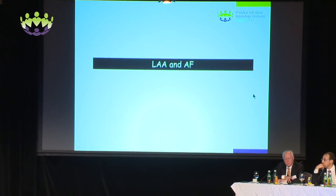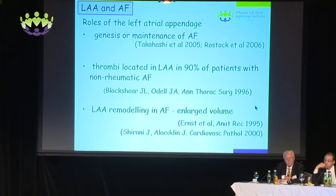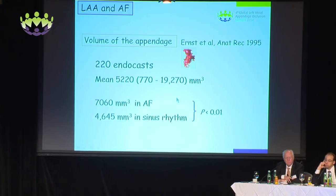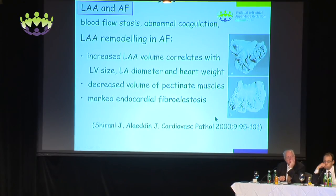The relationship of the left appendage and atrial fibrillation: there have been several studies reporting this. Thrombi are located in the left appendage in about 90% of patients with non-rheumatic atrial fibrillation. Anatomic studies showed left atrial appendage remodeling in atrial fibrillation, giving enlarged volumes. Ernst's study showed a distinct difference in LAA volumes between patients with AF and those in sinus rhythm. Shirani's study suggested abnormal blood flow and abnormal coagulation as culprits for thrombus formation, and also observed not only an increase in volume of the left atrial appendage but a decrease in volume of the pectinate muscles and marked endocardial fibroelastosis.